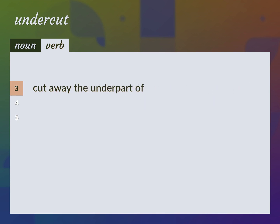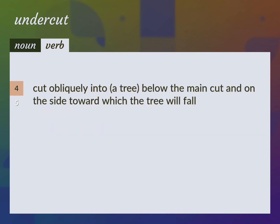Cut away the under part of. Undercut a vein of ore. Cut obliquely into a tree below the main cut and on the side toward which the tree will fall.